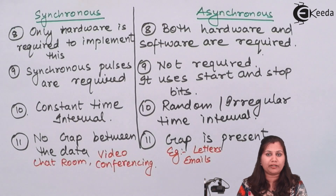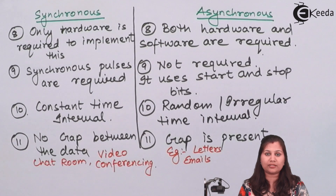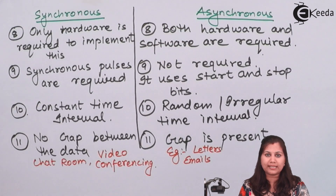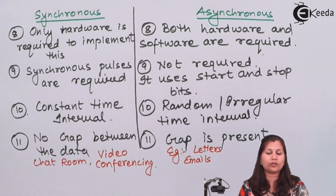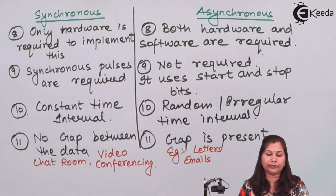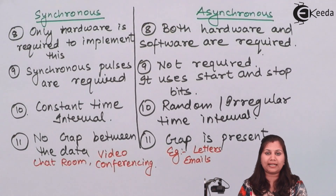So the major difference is that in synchronous data transmission, we have a clock pulse that is synchronized for both the receiver and transmitter — both share one single clock. Whereas in asynchronous, no external clock is required; the transmitter and receiver use their internal clocks, with no synchronization required — that is why it is called the asynchronous method. We studied all the differences between the synchronous and asynchronous methods.